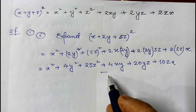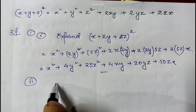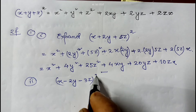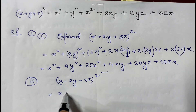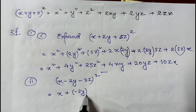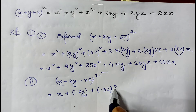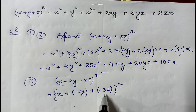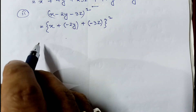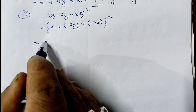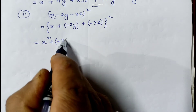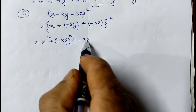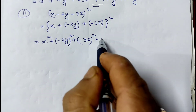Now another sum: question number 2 — expand (x − 2y − 3z)². This can be written as (x + (−2y) + (−3z))². So x is the x part, −2y is the y part, and −3z is the z part. Now applying the formula (x+y+z)², it will be x² + y² + z² + 2xy + 2yz + 2zx.